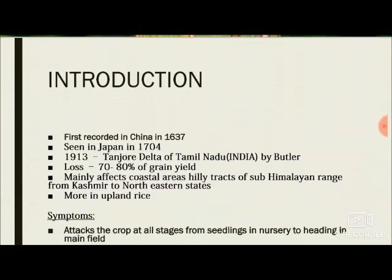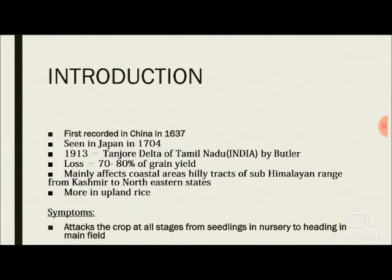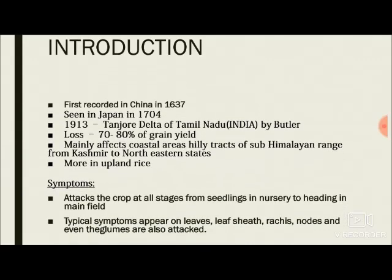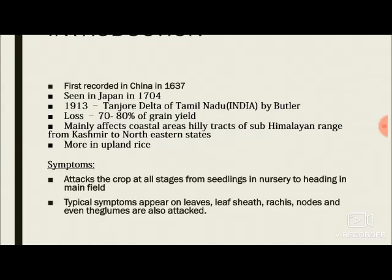Coming to the introduction, this disease — blast of rice — was first recorded in China in the year 1637, and after that it was reported in Japan in the year 1704. In India, it was reported by the scientist Butler in the Tanjore Delta of Tamil Nadu in the year 1913, and the losses are estimated to be 70 to 80 percent of grain yield.